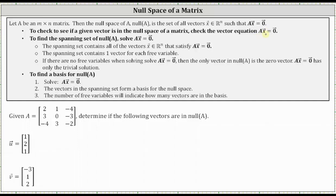If A times vector x equals the zero vector, then the vector is in the null space of the matrix. If A times vector x is not equal to the zero vector, the vector is not in the null space of the matrix.